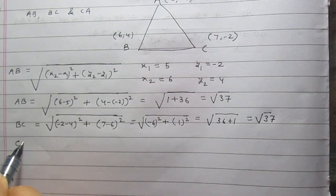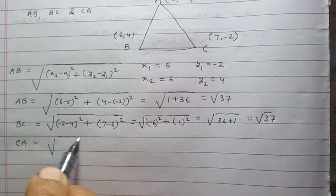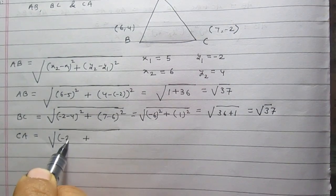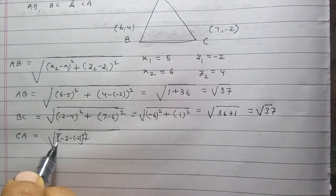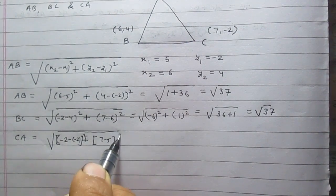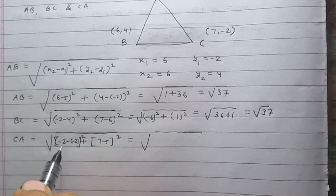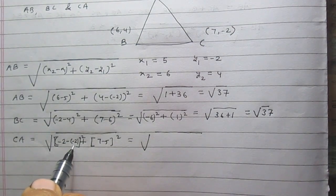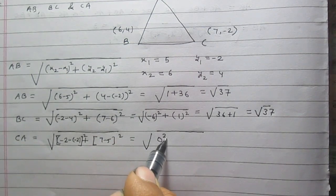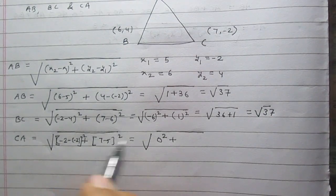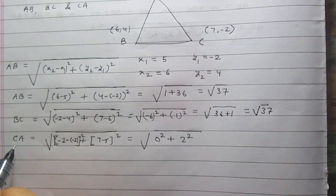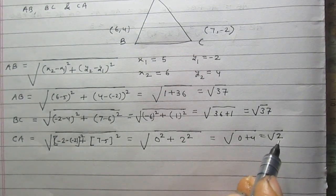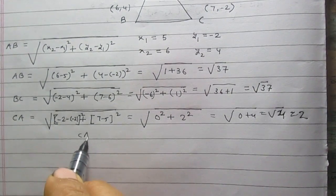Now let us calculate side CA using the distance formula: CA = √((-2-(-2))² + (7-5)²) = √(0² + 2²) = √(0 + 4) = √4 = 2. So side CA is equal to 2.